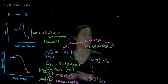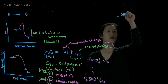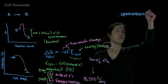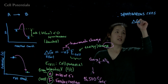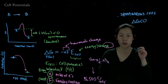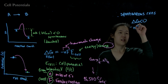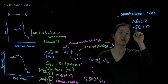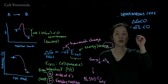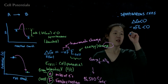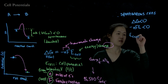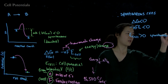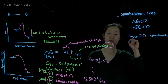For a reaction to be spontaneous, delta G must be less than zero. Therefore, negative nFE must be less than zero. Since n and F are always positive, E_cell must be greater than zero for a reaction to be spontaneous. If E_cell is less than zero, it's non-spontaneous.